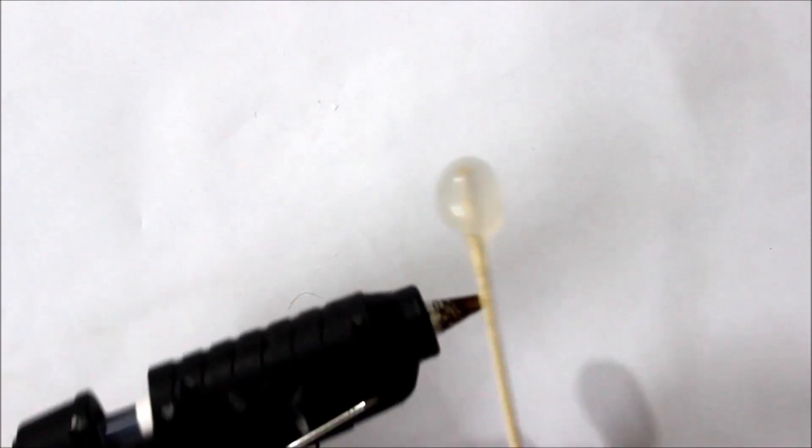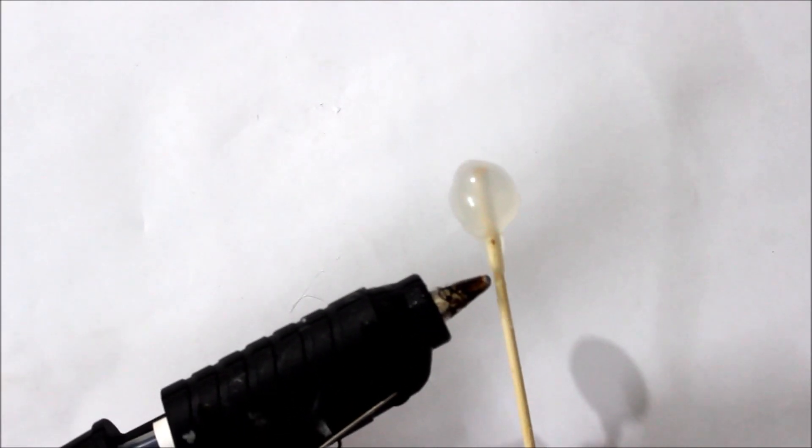Now the next step is to make two spiral rings around the stick.